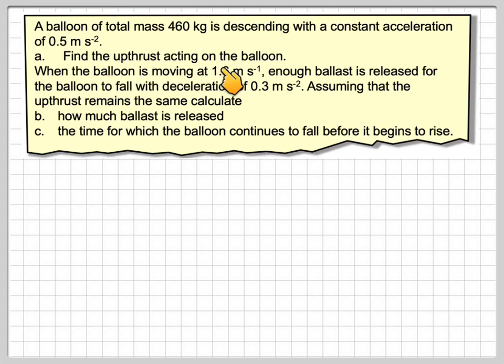When the balloon is moving at 1.6 meters per second, enough ballast is released for the balloon to fall with a deceleration of 0.3 meters per second squared. Assuming the upthrust remains the same, calculate how much ballast is released and the time for which the balloon continues to fall before it begins to rise.